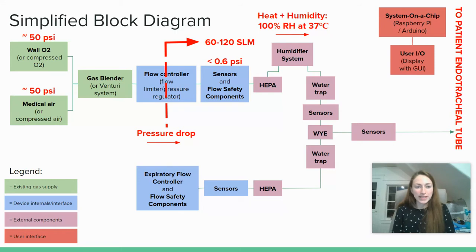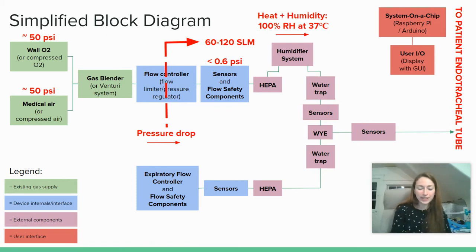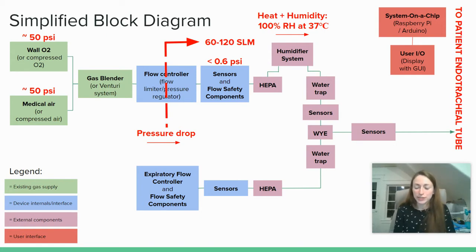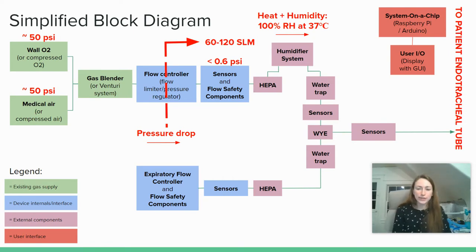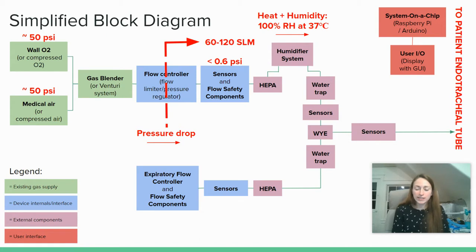To review from last time, we have this simplified block diagram of what the typical critical care ventilator workflow looks like. Last time we talked about some of the flow limitations within this circuit — how by the time airflow is supplied to the patient, we're operating within a range of zero to around 0.6 psi. We also have pretty high airflow within the range of 60 to 120 standard liters per minute. Depending on where you are in the circuit, you'll also be boosting heat and humidity to 100% relative humidity at 37 degrees Celsius from the humidification system. So you really need to be mindful of these things depending on which sensors you're speccing.